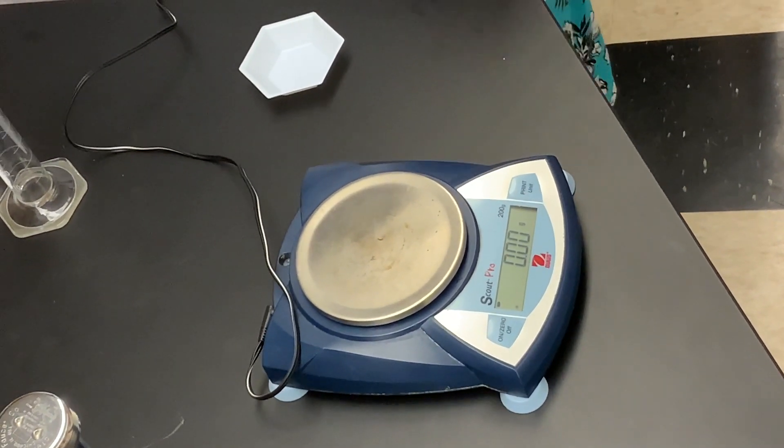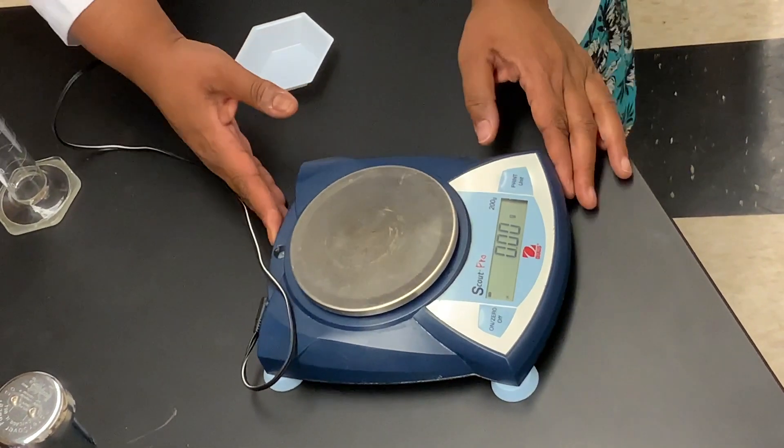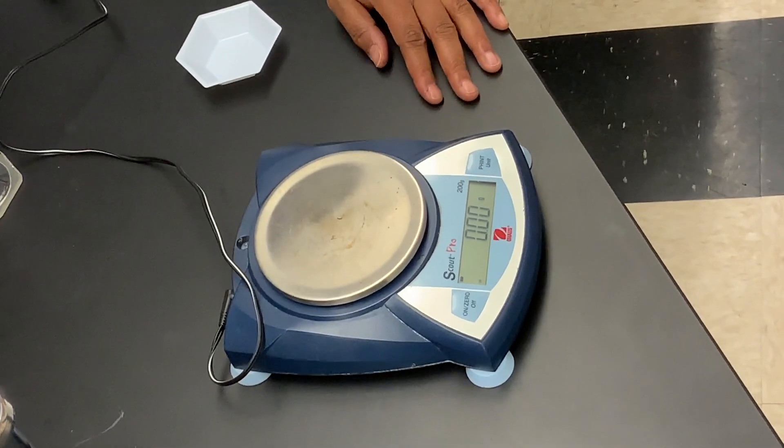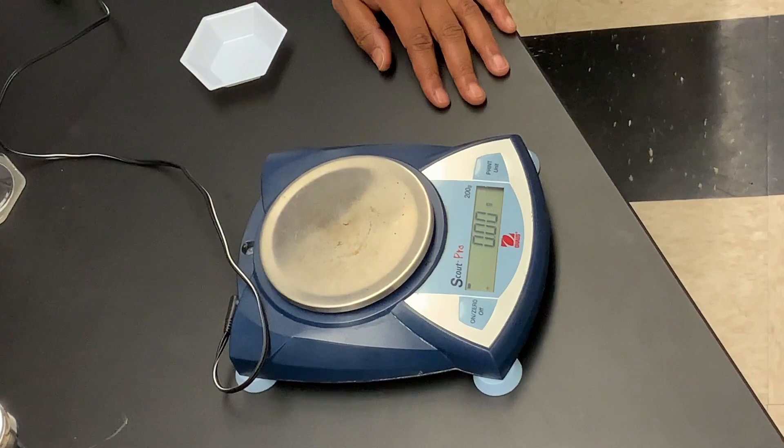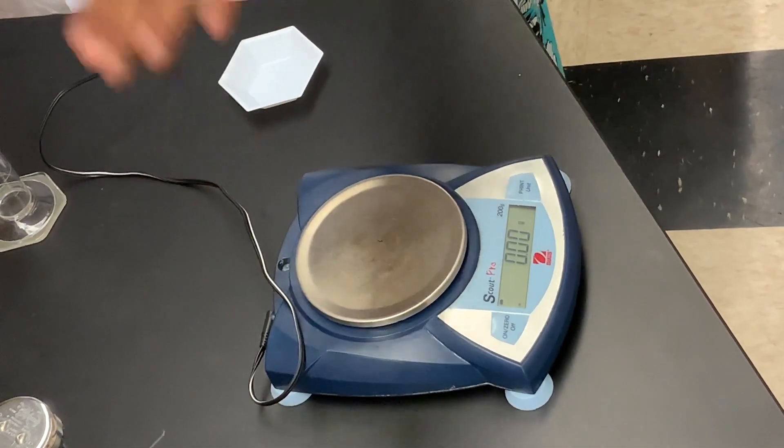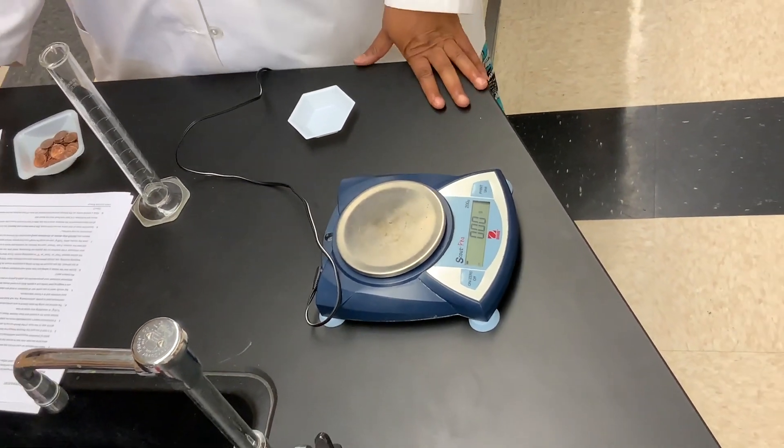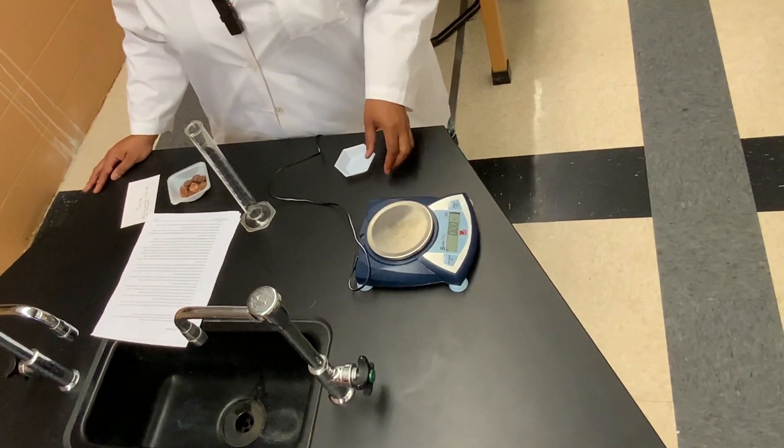When you use your balance, it's always a best practice to have your balance close to the front edge of your benchtop. That way, you don't have to continuously reach across to try to reach your balance and determine the mass of whatever substances you're measuring. Once we've got our balance on, we see the zeros there.